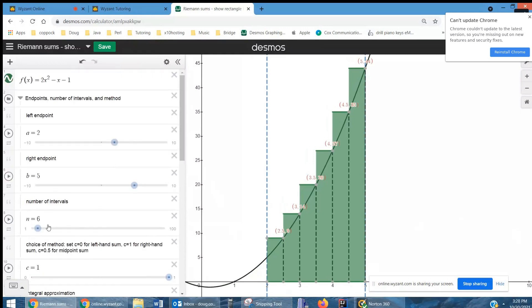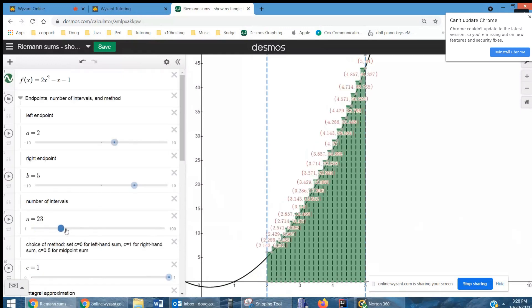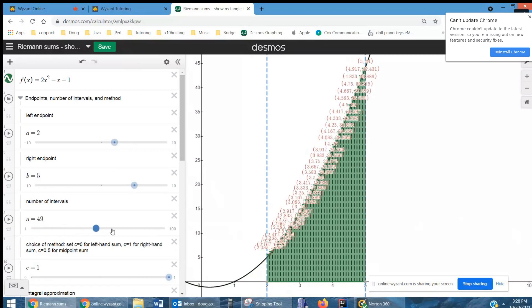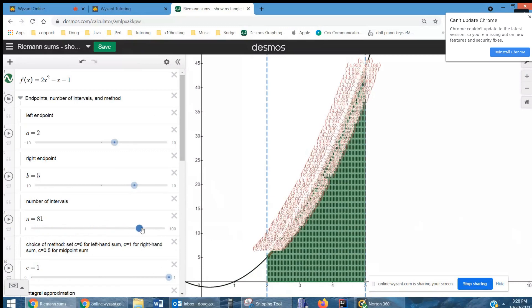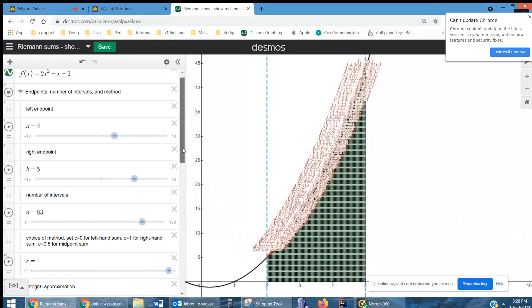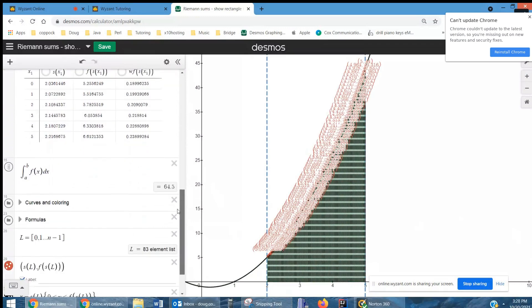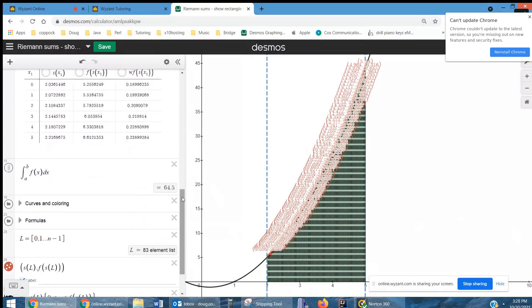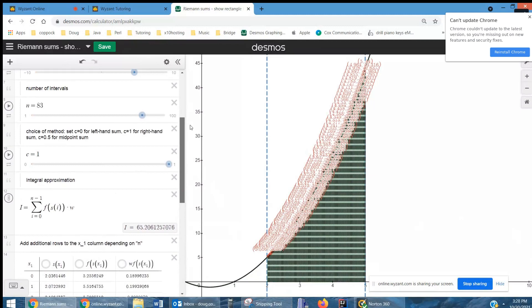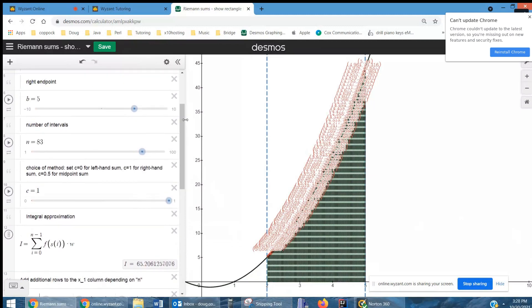And of course, if we increase the number of intervals or rectangles to quite a few, here we have the sum of all those rectangles is 65.2. 64.5 is the true area. So we get closer and closer as the number of rectangles approaches infinity.